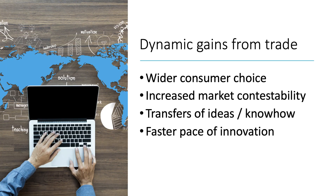Dynamic gains from trade happen over time and are harder to show in a diagram. It's really about how trade increases the scale of choice available to consumers — different foods, drinks, or tourist destinations. Trade can also increase the contestability of markets, making them more competitive and helping to break down monopoly power. Dynamic gains also encompass the transfer of ideas and know-how across borders — collaborative work that can produce a faster pace of innovation, potentially helping to address the climate crisis and making growth more sustainable.